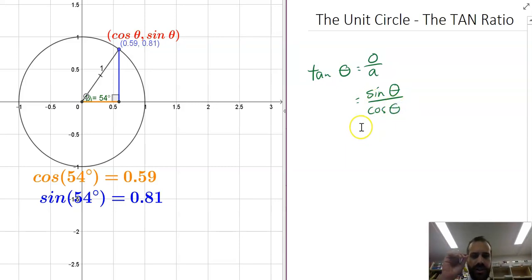So now we have this great identity, which is what we call this thing, that tan theta is equal to sin theta over cos theta, and that's why it is true.